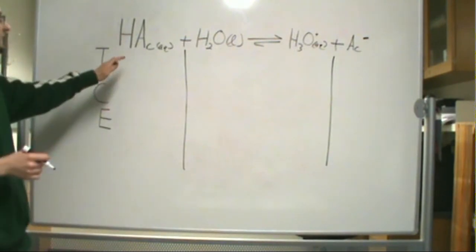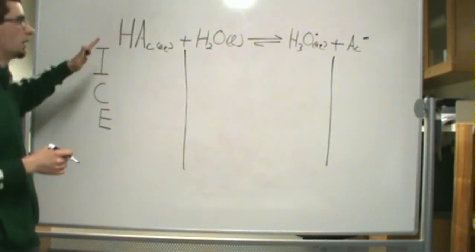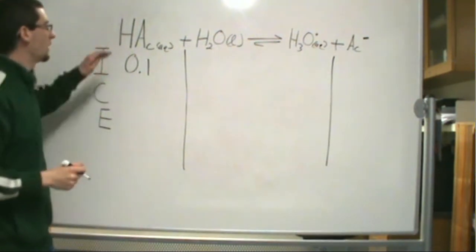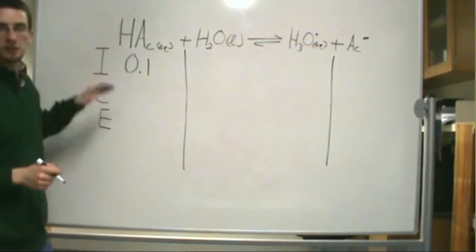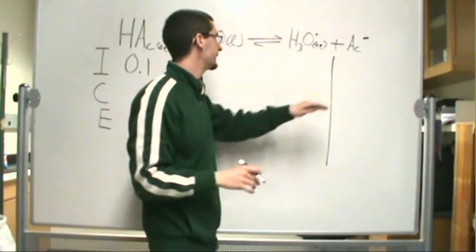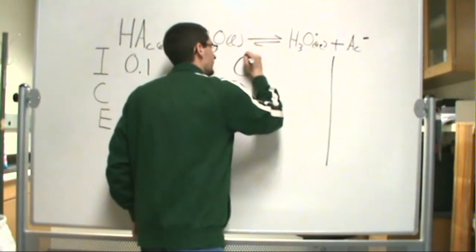So initially, I said we start off with an initial concentration of 0.1 molar of acetic acid. This is before the equilibrium has occurred. So we have no H3O+, and we have no acetate anion. So these values are 0.